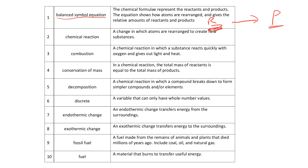A chemical reaction is a change in which atoms are rearranged to create new substances. So you might have fuel and you might burn it to make something new — that is a chemical reaction. A chemical reaction in which substances react quickly with oxygen and give out light and heat is combustion.